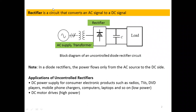A rectifier is a circuit that converts an AC signal to a DC signal. Here, an AC supply from a transformer has been given as the source. From the transformer, the signal goes towards the rectifier, which is nothing but a diode — an uncontrolled switch. We are now discussing uncontrolled rectifiers. The major difference between controlled and uncontrolled rectifiers will be observed within this session.